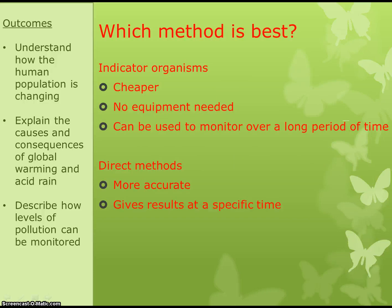For the higher paper, you need to be able to discuss which method is best. Indicator organisms are cheaper, require no equipment, and can be monitored over a long period of time — those are the advantages. Direct methods, however, are more accurate and give results at a specific point in time, so you can know exactly what conditions are like at different times of day, which you can't determine with indicator species. You just need to describe the pros and decide which method is best depending on what you're looking for.